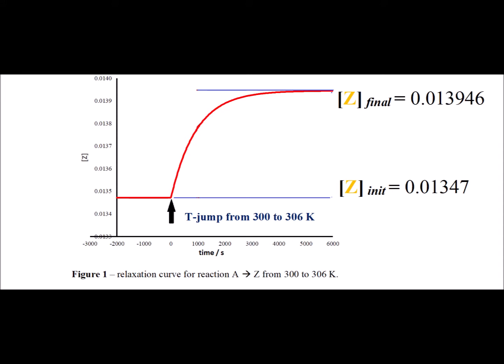The reaction continues until we notice that the red line, the concentration of Z, starts to plateau, which tells us that we have now reached a new equilibrium. And this equilibrium concentration of Z is 0.013946.